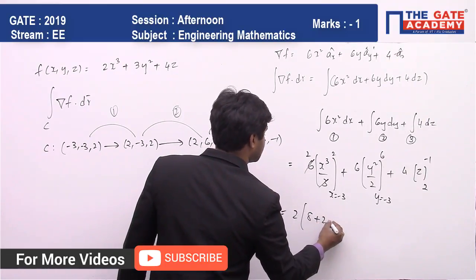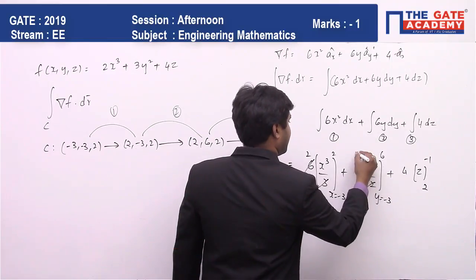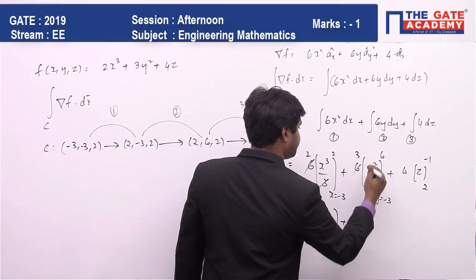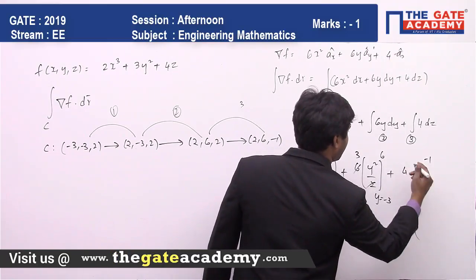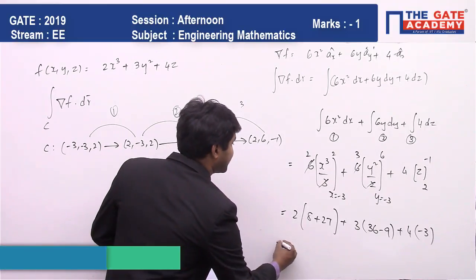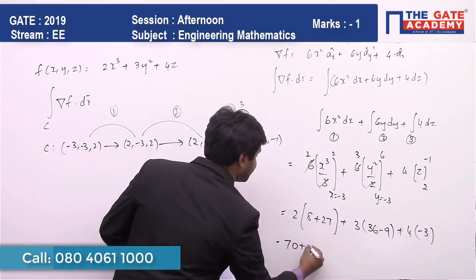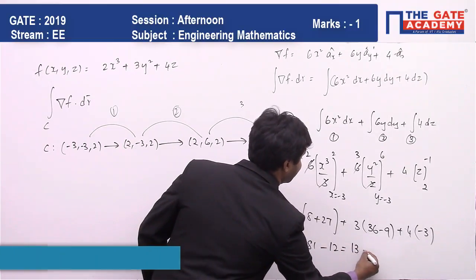So here this is 2 times (8 + 27), 3 times (36 - 9), plus 4 times (-3). So here the value is 70 and here the value is 81 minus 12, which comes to be 139.